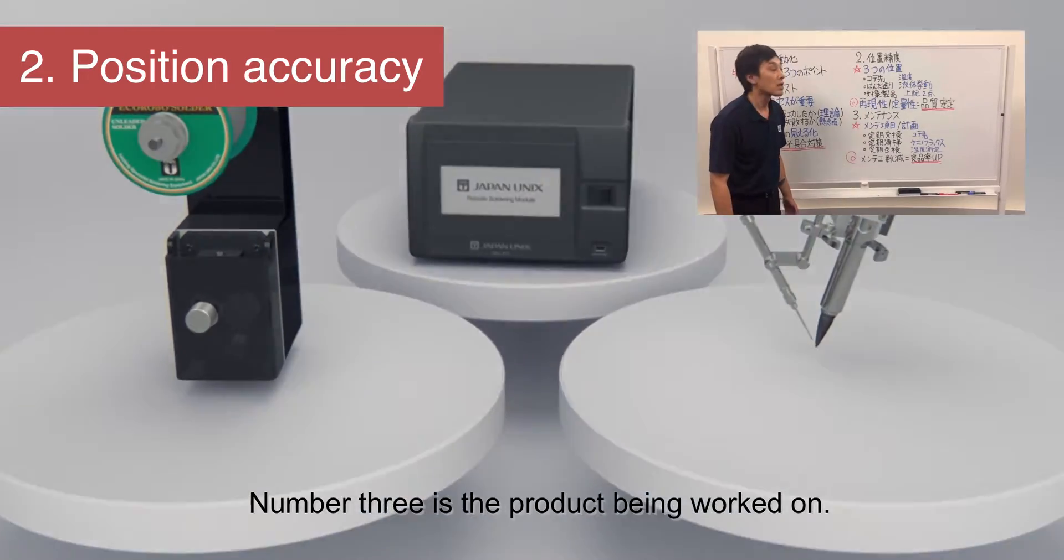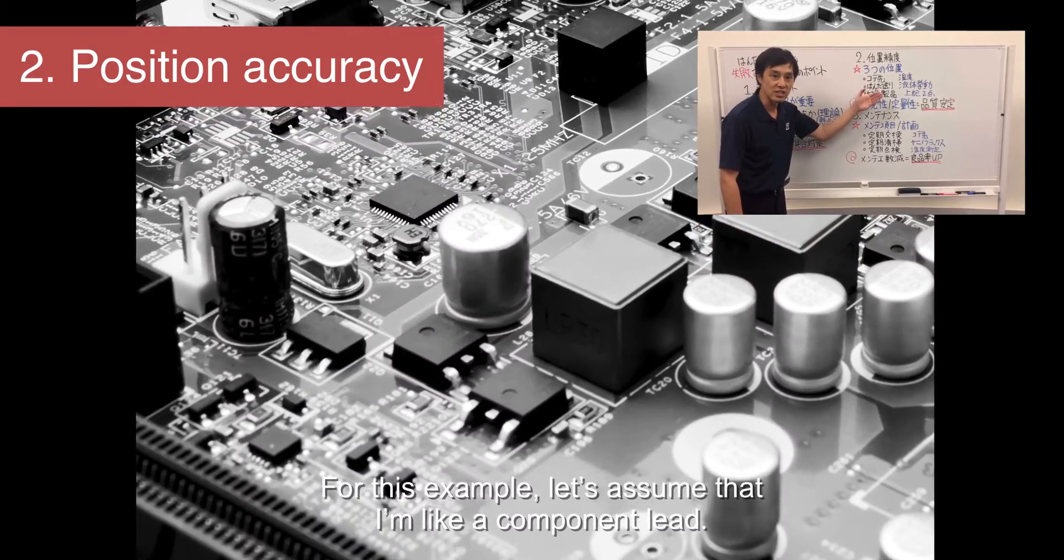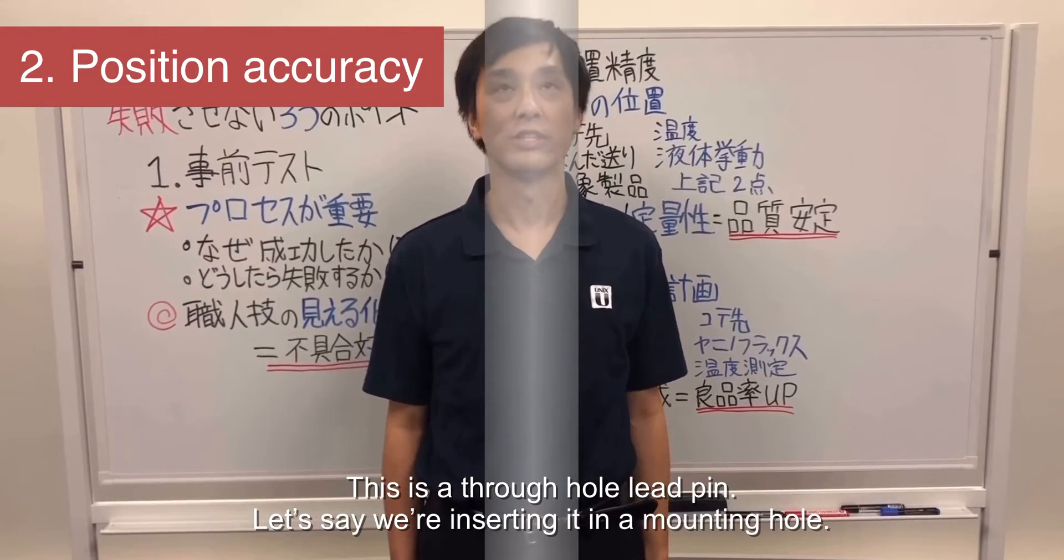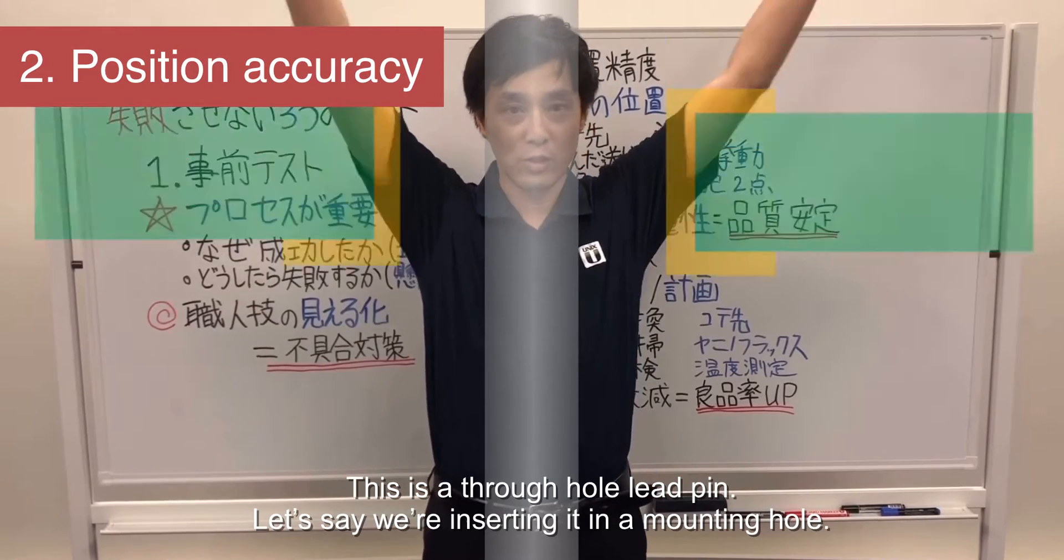Number three is the product being worked on. For this example, let's assume that I'm like a component lead. This is a through-hole lead pin. Let's say we're inserting it in a mounting hole.